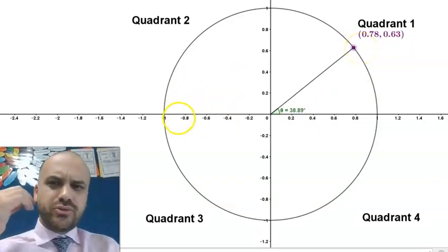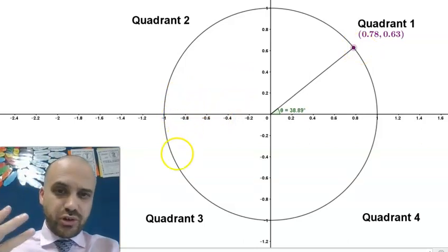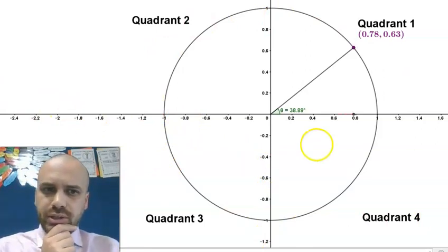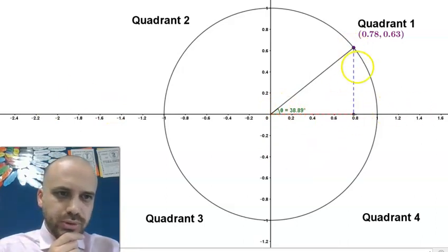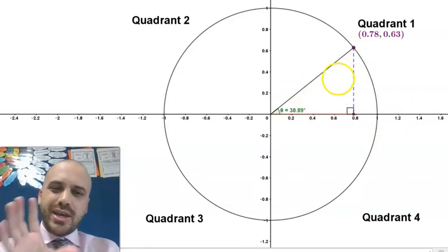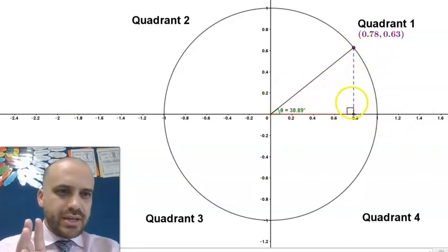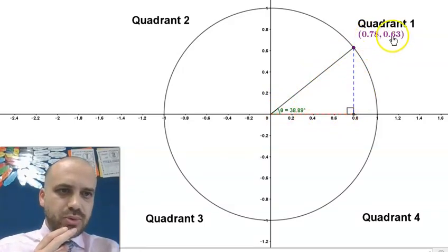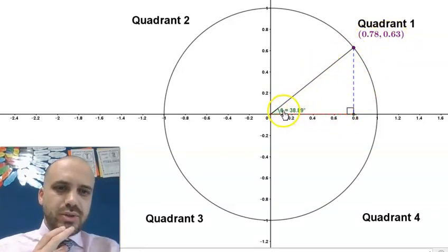And you'd be right to say, wait a minute, trigonometry is about triangles. I don't see any triangles. So let's build ourself a triangle. A little red dotted line along here, a little blue dotted line along here, and a right angle in here. And now it's pretty obvious that we have a nice right angle triangle. But how is this coordinate related to this angle?